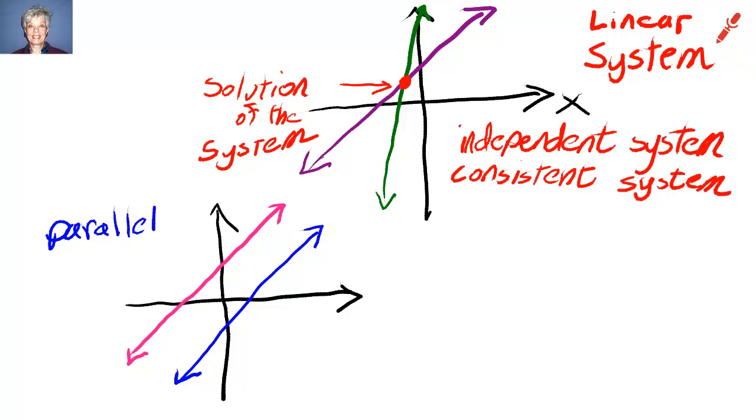Well, if they never cross, they never touch. And so they're not consistent. I need to find another color. I'll use red again. Really should have used that to write parallel. So let me circle that in red. This system, because the two lines do not touch, this is an inconsistent system.